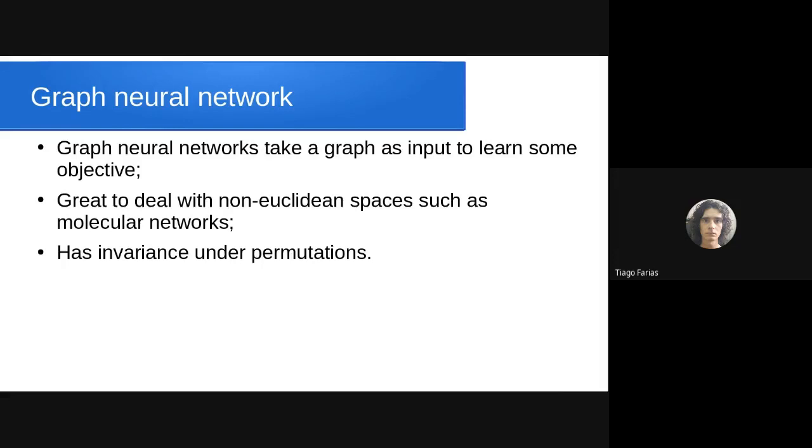Graph neural networks are more useful when you're dealing with non-Euclidean space, such as molecular neural networks. One property of graph neural networks is that they have invariance under permutations.